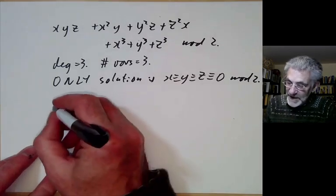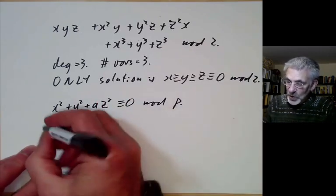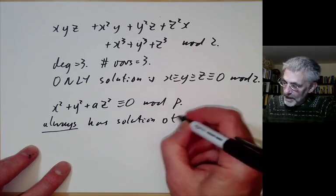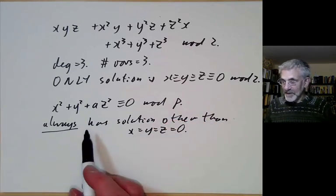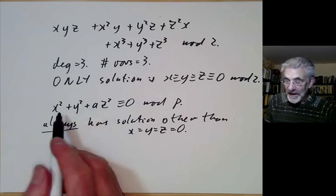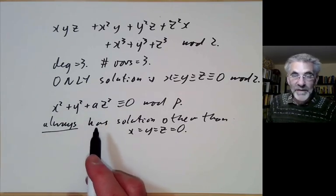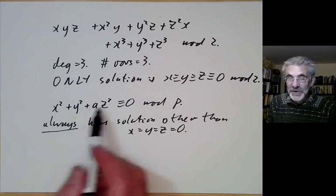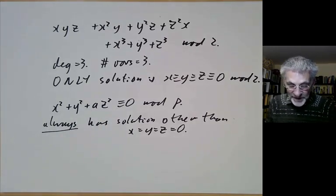Let's have another example. If you take the equation x² + y² + az² ≡ 0 mod p, this always has a solution other than x = y = z = 0. So this is an example of a quadric, which means a degree 2 homogeneous polynomial. And as long as a quadric has at least three variables, it will always have a non-trivial solution over a finite field. If you've done projective geometry, you can think of the solutions of this as being the points of a conic in a projective plane. And this says that a conic over finite fields always have points on them.